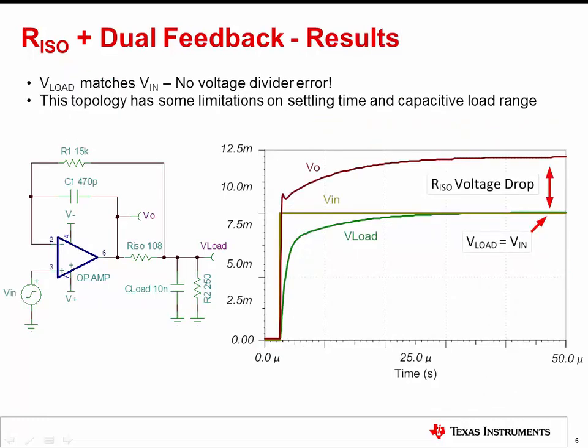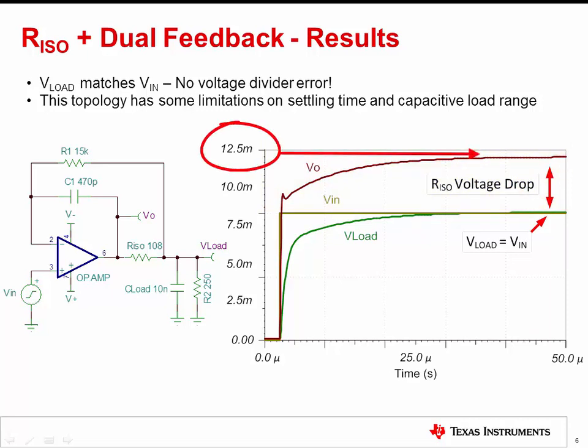The circuit results show that the output and load voltage arrive at the final level without excessive overshoot or ringing, indicating a stable system. The increase in VO to overcome the voltage drop from R-ISO can be clearly seen here.